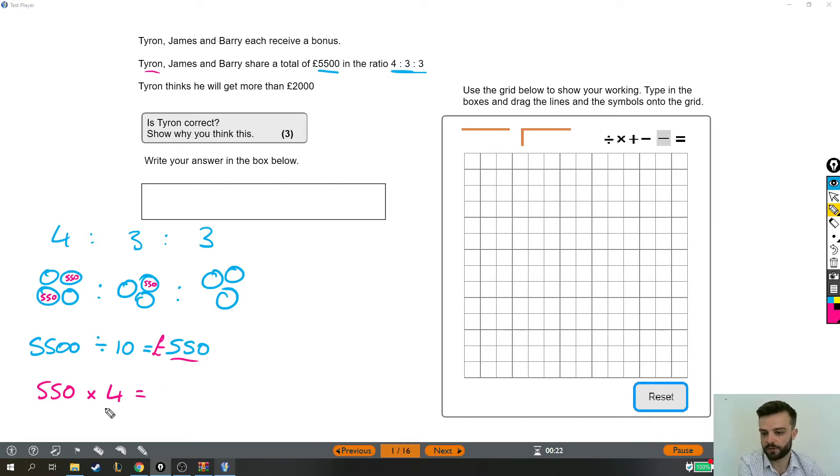For me, what I think of when I'm timesing by four is doubling it to get two lots of it and then doubling that to get four lots of it. So if I do £550 times two, that answer is £1,100. And then we times that by two to get £2,200. So you don't have to use this method at all, this is just my way of doing it. But as long as you've got some way of doing £550 times four to get £2,200, you're fine.